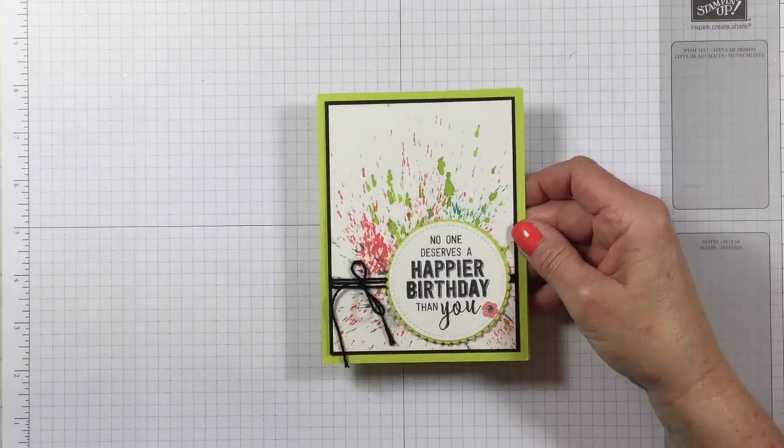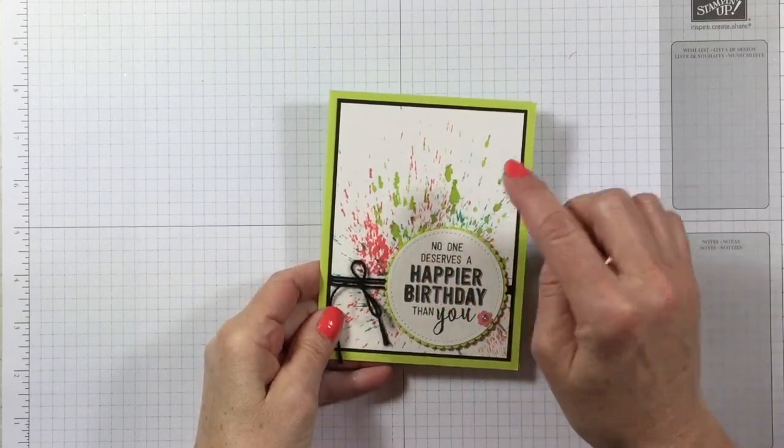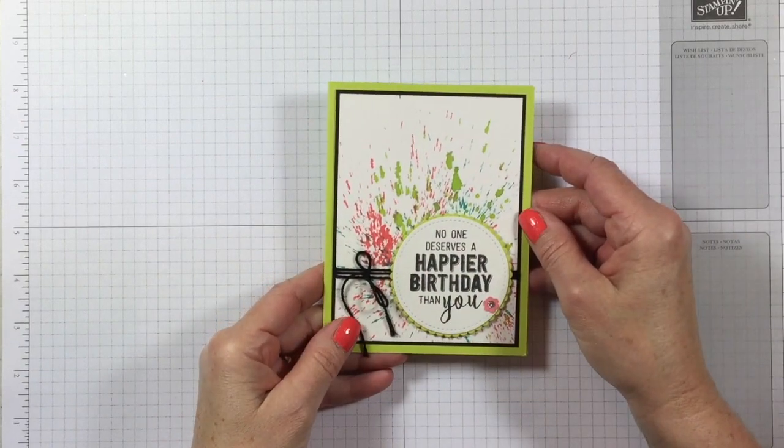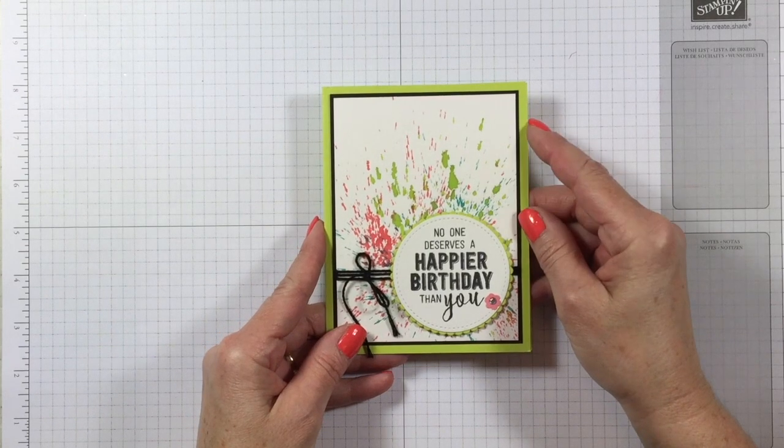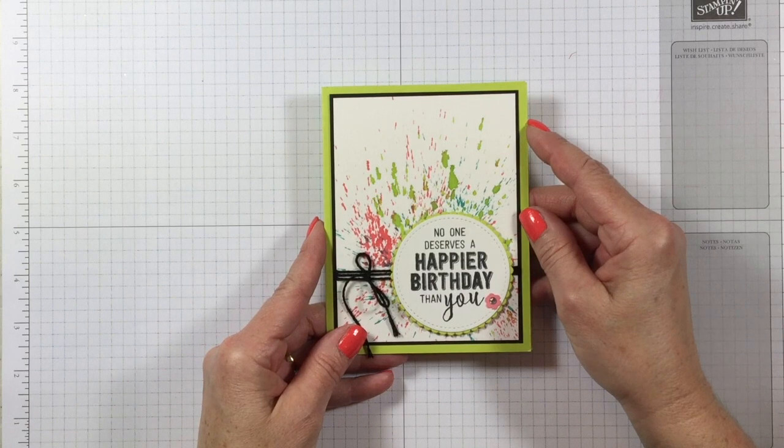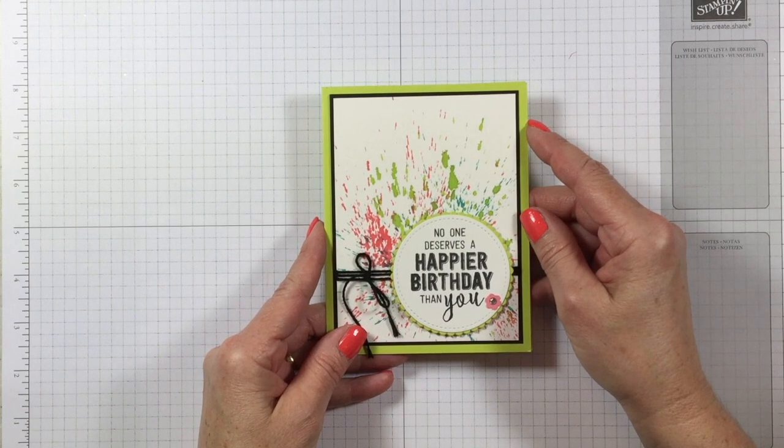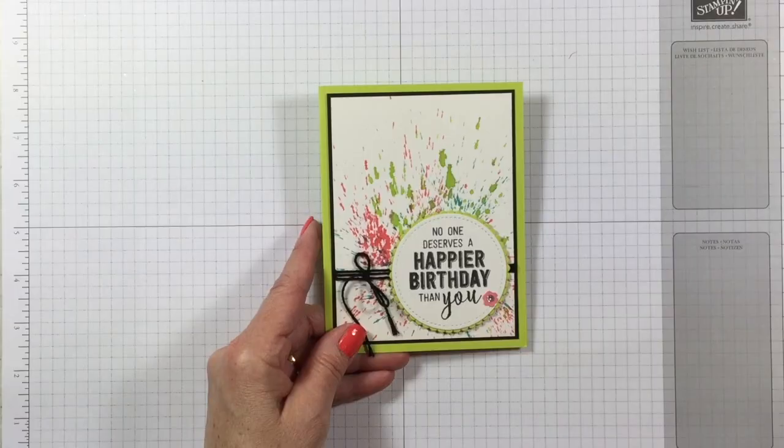Today I promised you that I would show you this really cool technique for my Wednesday tip video. This is called ink blowing and it involves reinkers and a straw and it is super cool. You can get a bunch of different looks out of this. I'll show you how this is done.